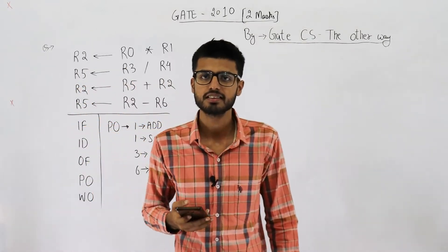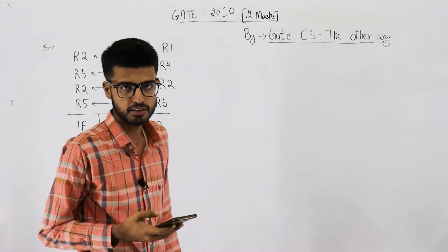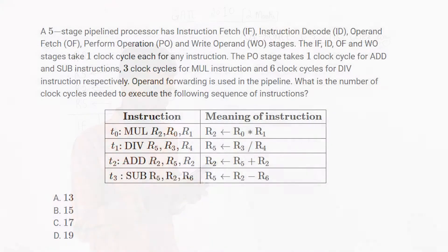Welcome back students. This question was asked in the GATE 2010 exam from the subject Computer Architecture and Organization — it's a two-mark question. A five-stage pipelined processor has instruction fetch (IF), instruction decode (ID), operand fetch (OF), perform operation (PO), and write operand (WO) stages. The IF, ID, OF, and WO stages take one clock cycle each. The PO stage takes one clock cycle for ADD and SUB, three clock cycles for MULTIPLY, and six clock cycles for DIVIDE instructions.